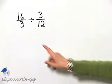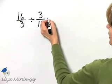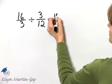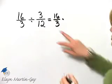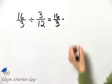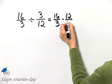Let's perform the indicated operation. It is division, so we write the first fraction, 16 over 3, times the reciprocal of the second fraction, and that reciprocal is 12 over 3.